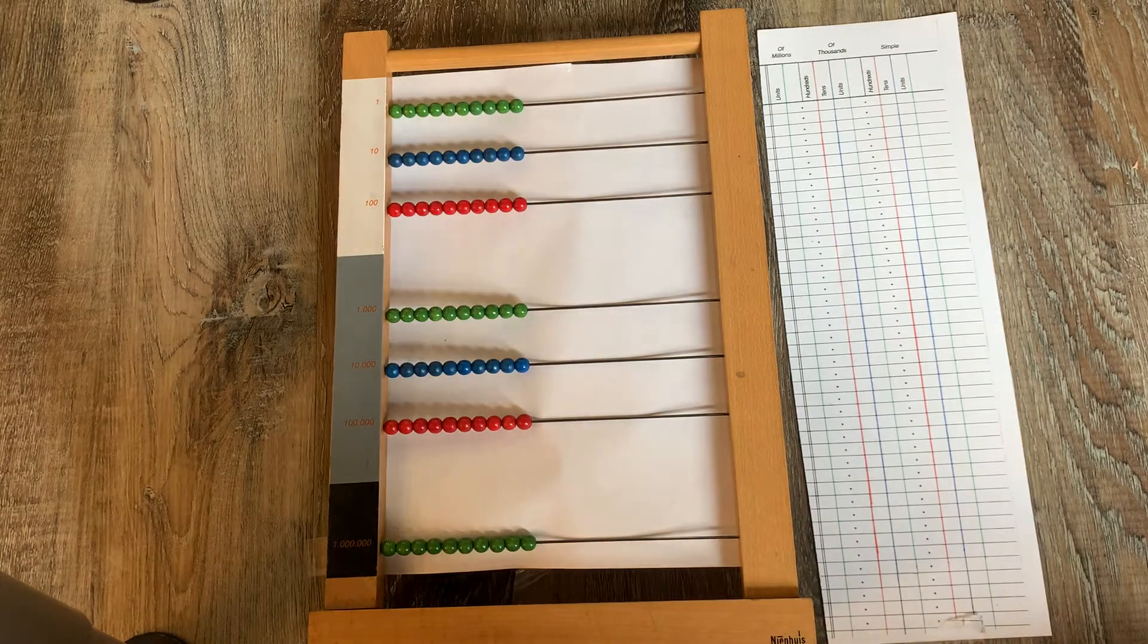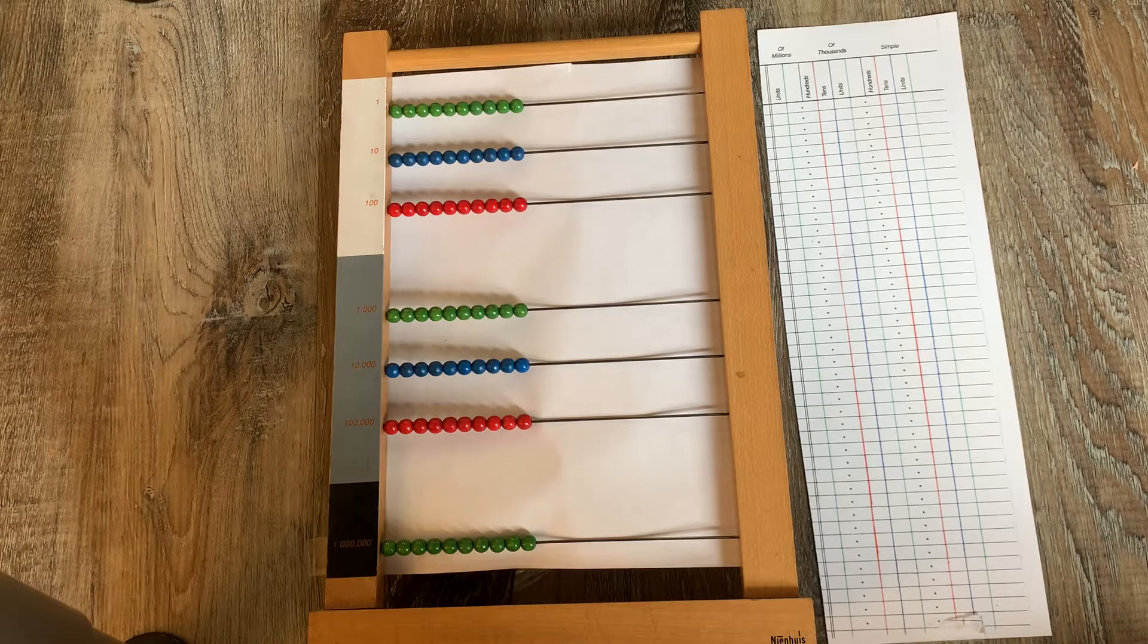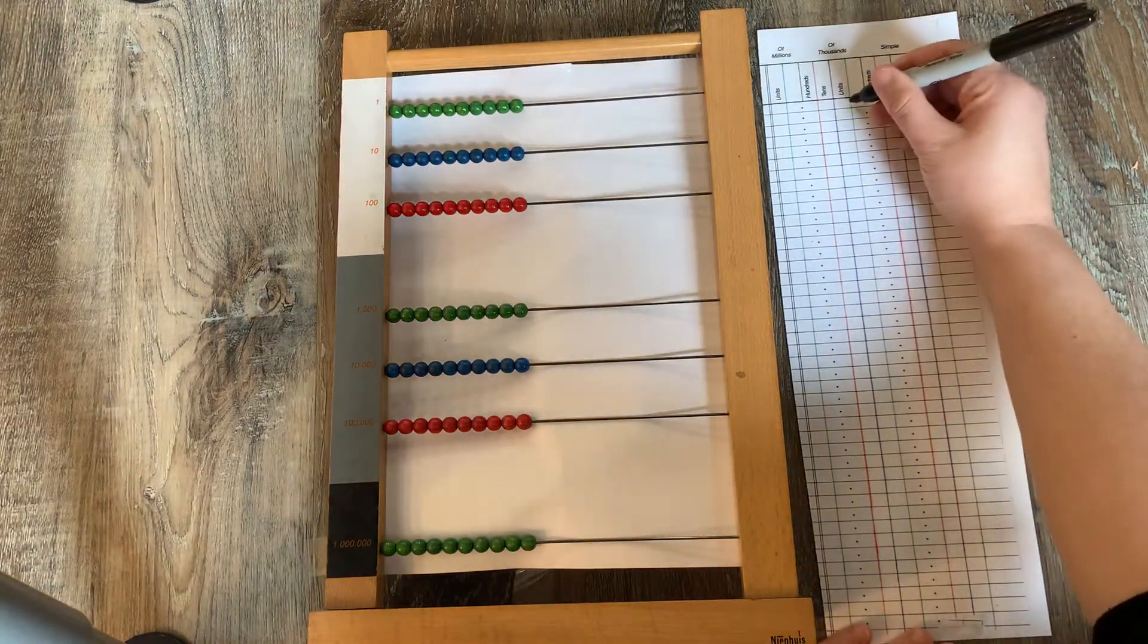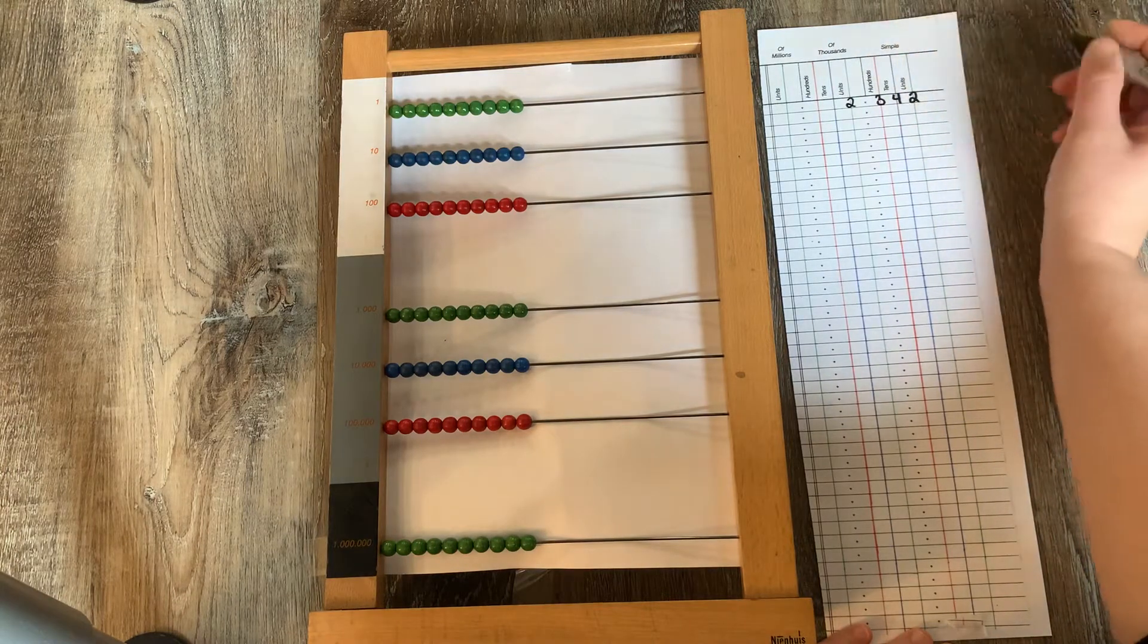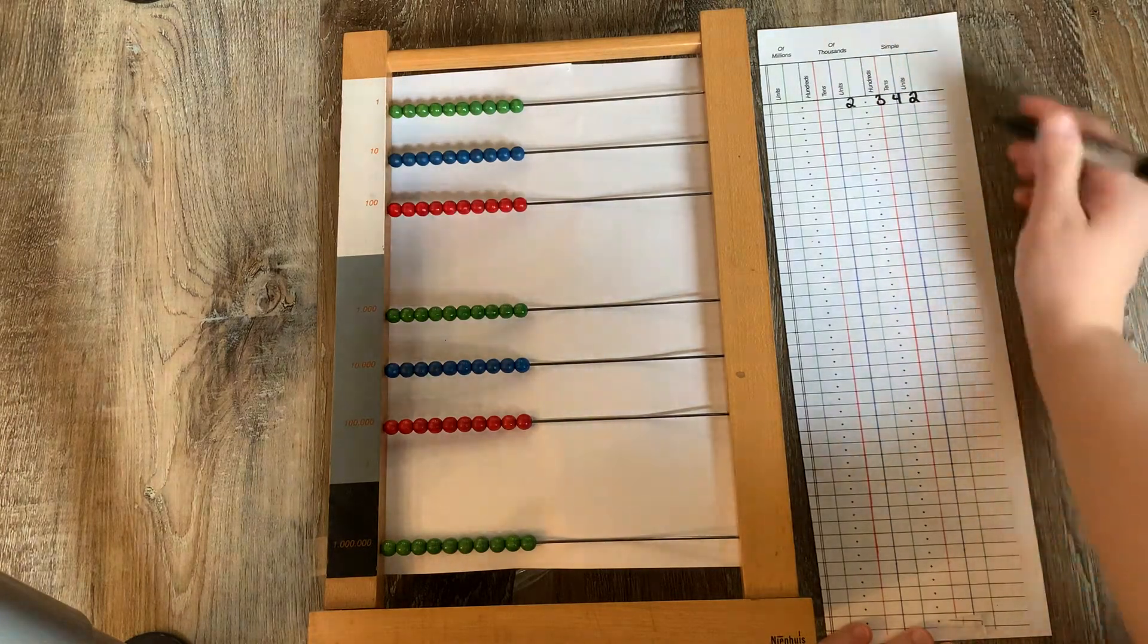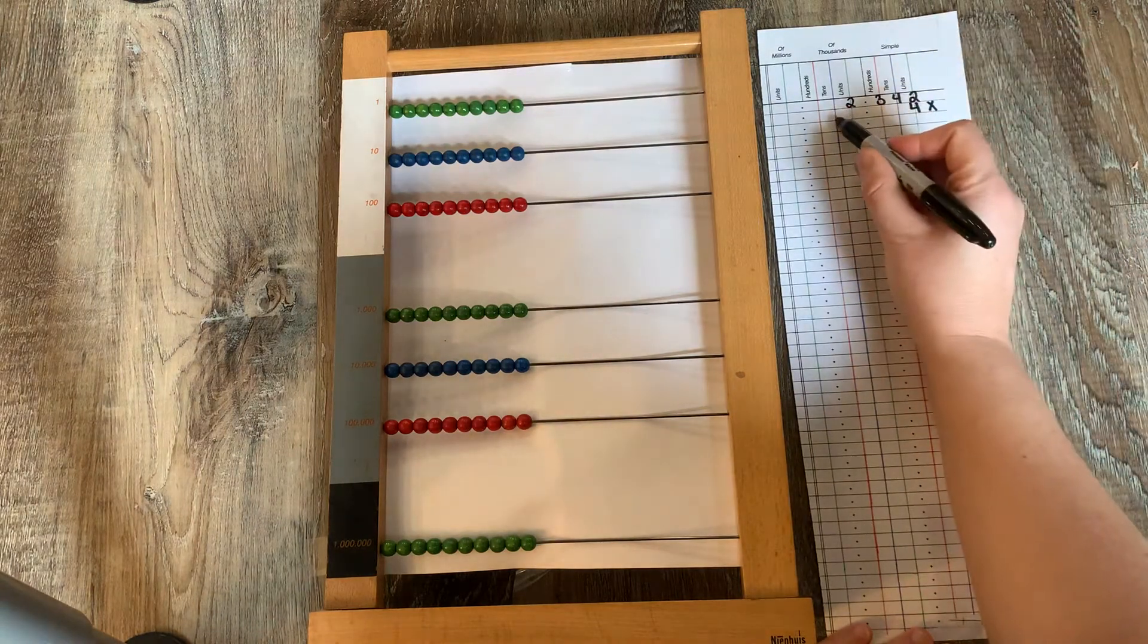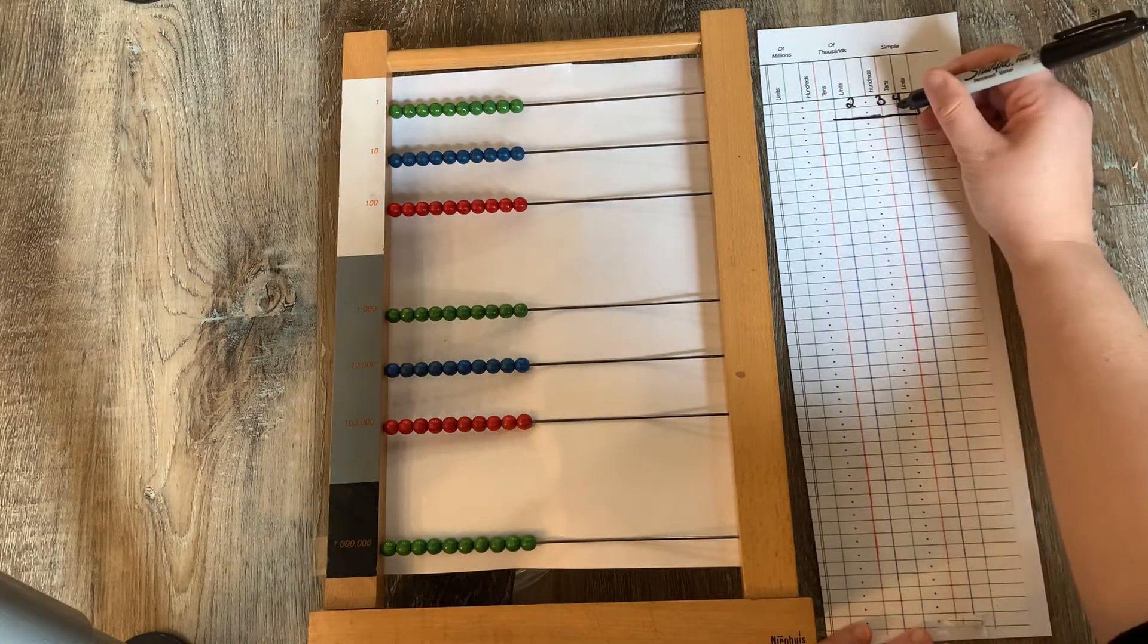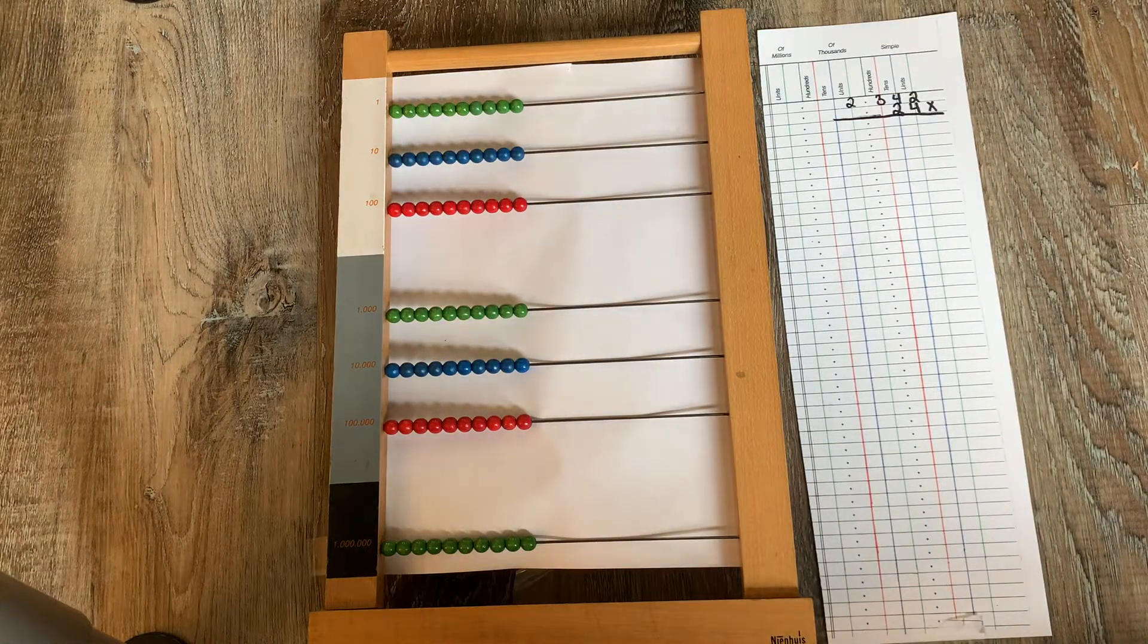Today I'm going to show you how to do a large multiplication problem on the large bead frame. Let's take the number 2342 and let's take that 24 times. Let's begin.